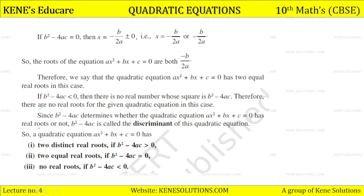If b²−4ac is less than 0, then there is no real number whose square equals b²−4ac. Therefore there are no real roots for the given quadratic equation. Since b²−4ac determines whether the quadratic equation ax² + bx + c = 0 has real roots or not, b²−4ac is called the discriminant of the quadratic equation.